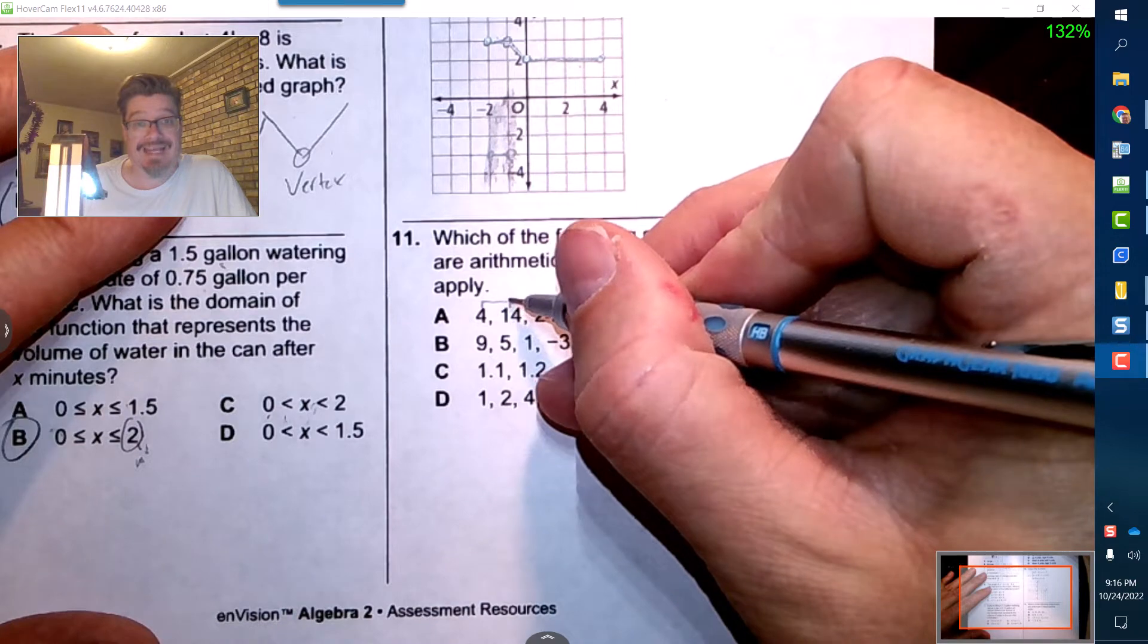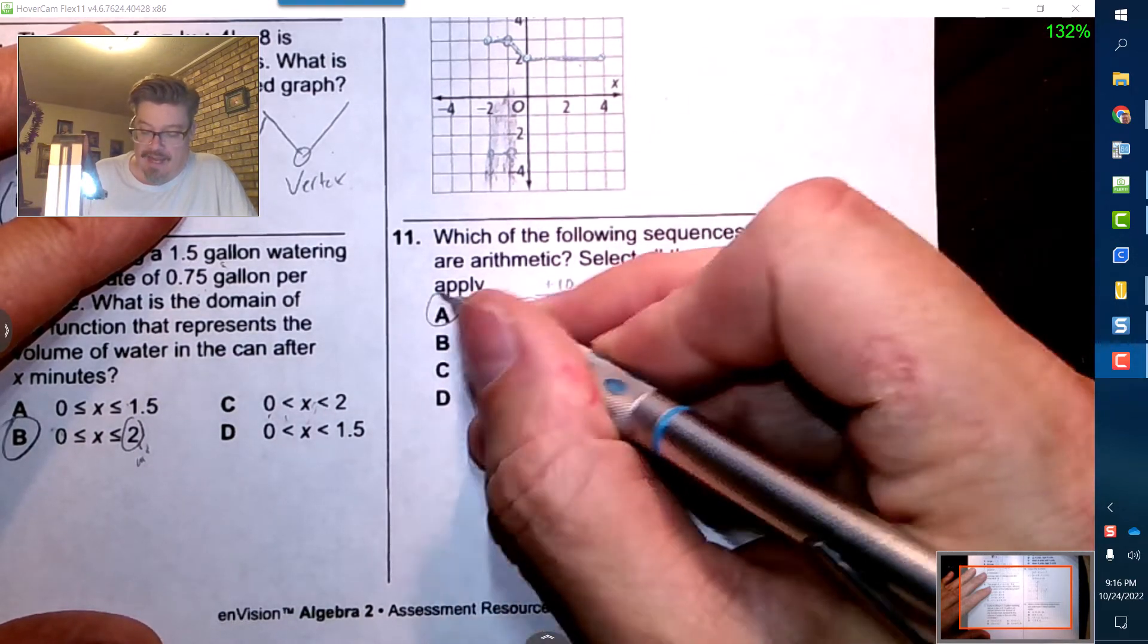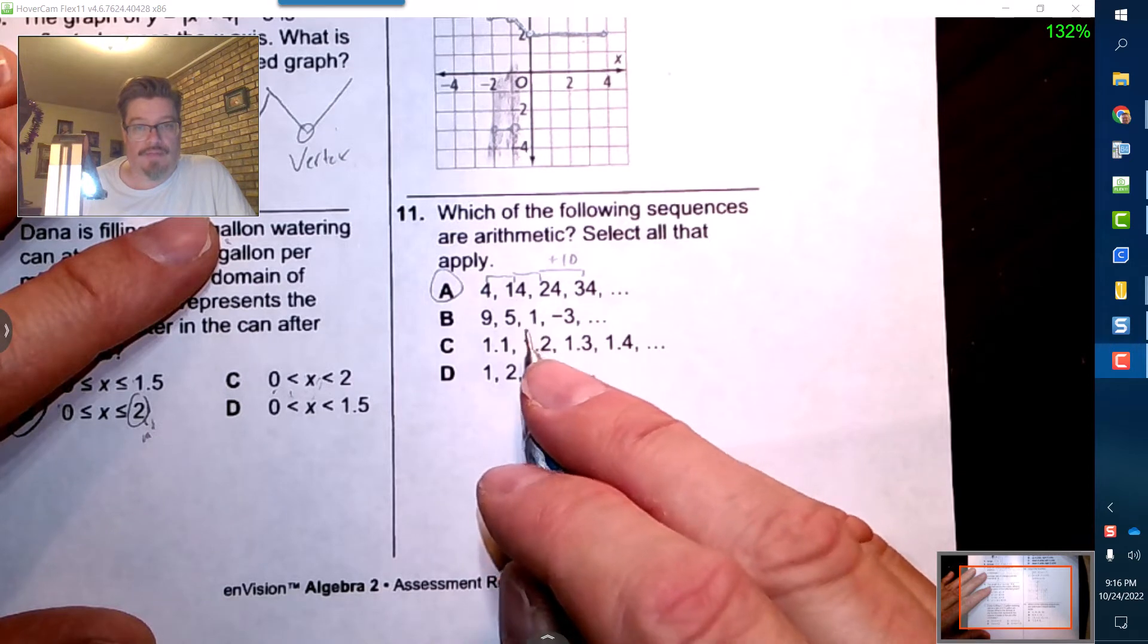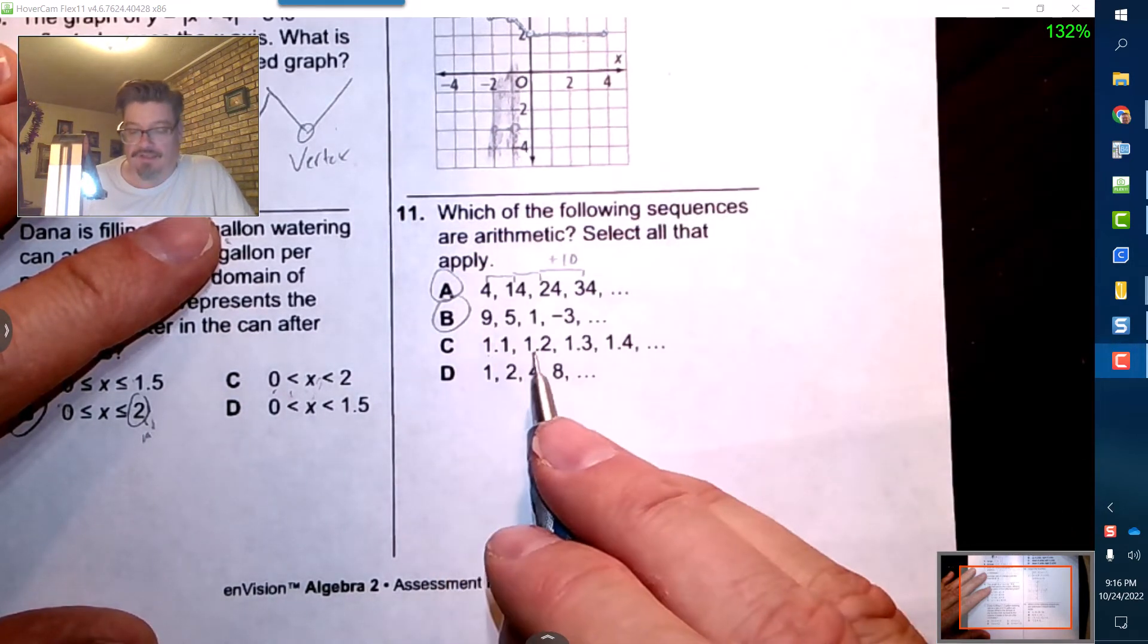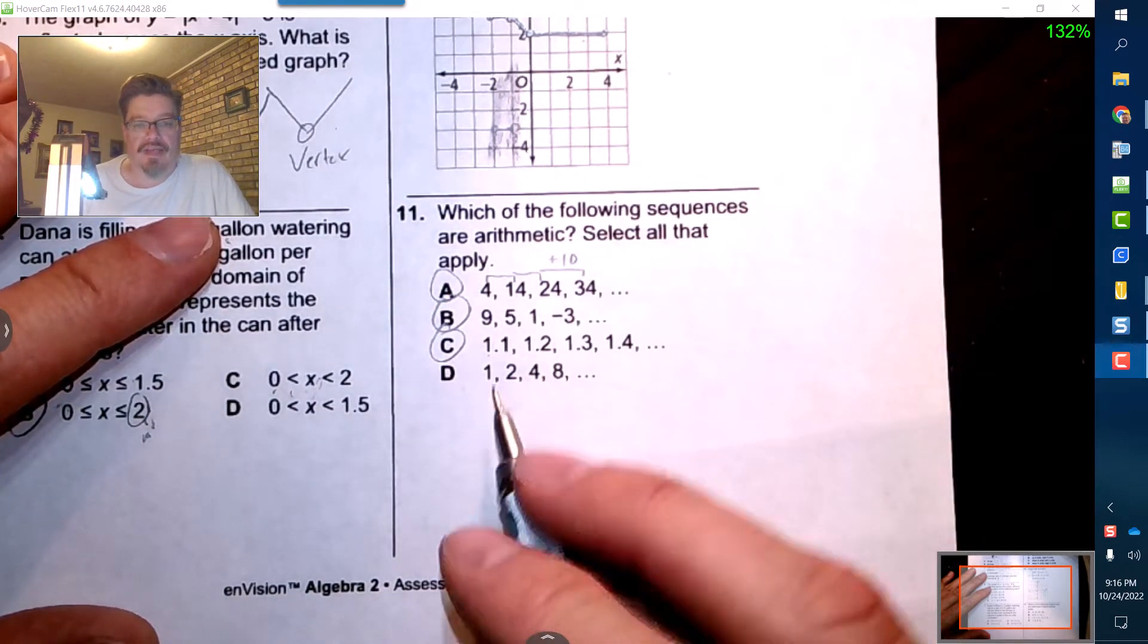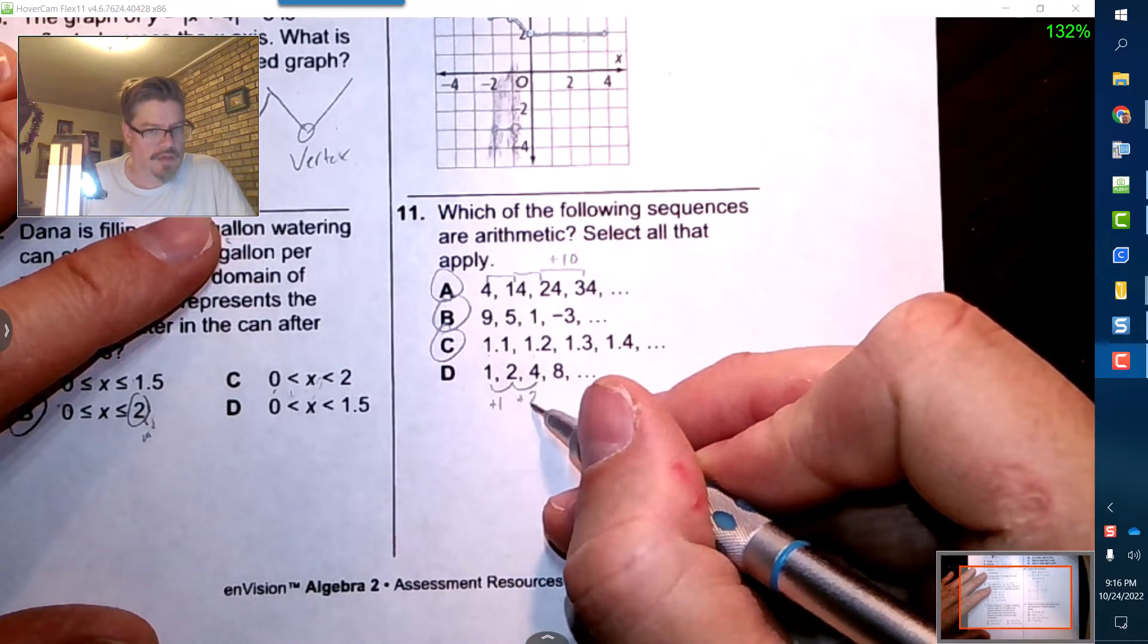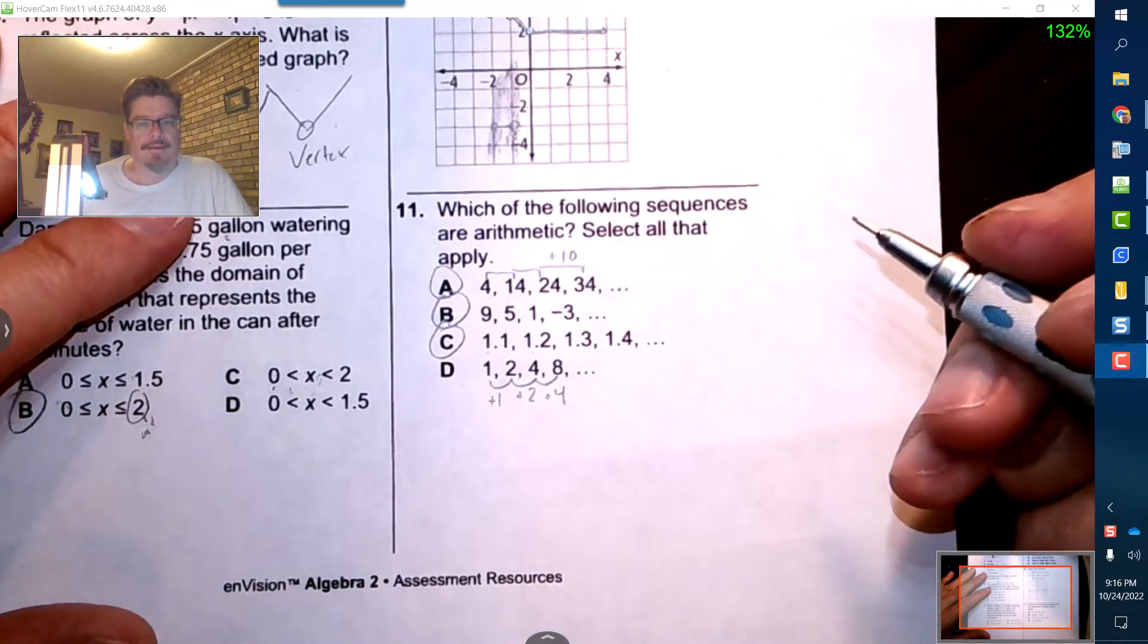So it's plus 10 every time, that guy is arithmetic. This one is going down by 4, down by 4, 1 minus 4 is negative 3, that guy's good as well. Looks like I'm going up by 0.1 each time, great. This guy is an increase of 1, this guy is an increase of 2, this guy is an increase of 4. That is not arithmetic.